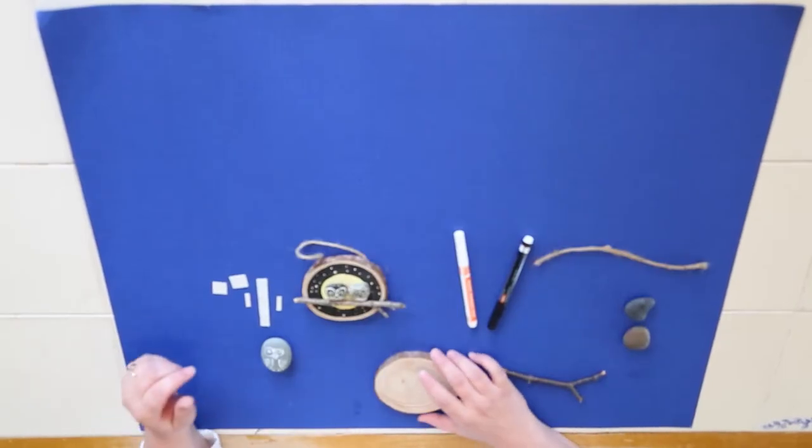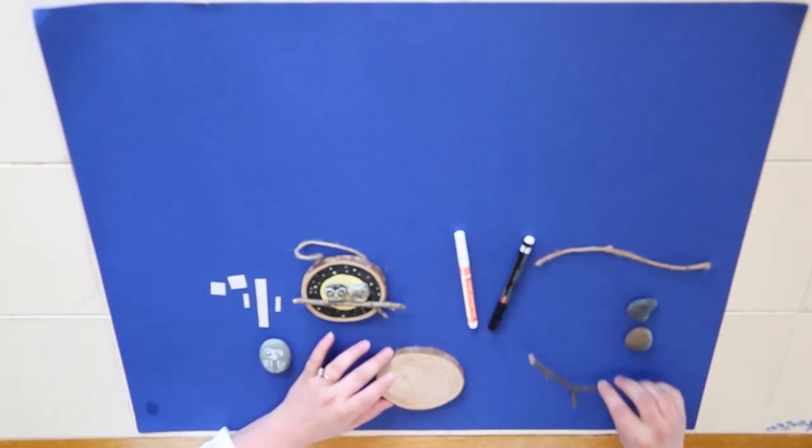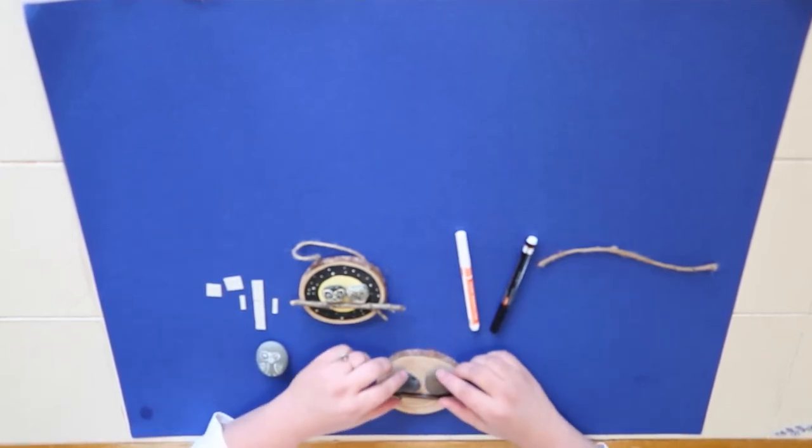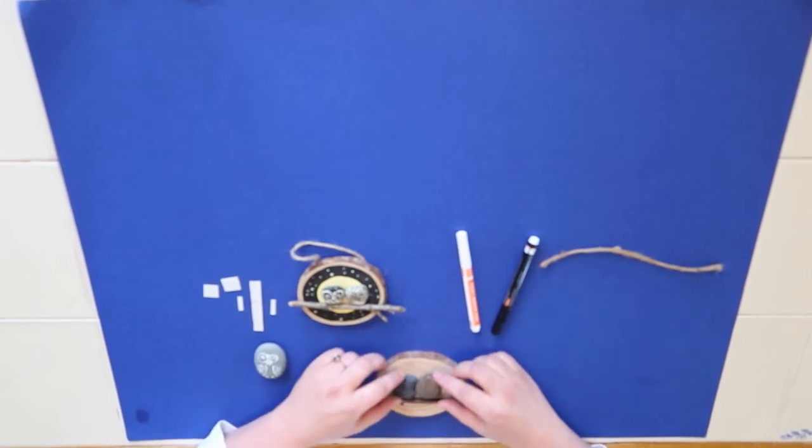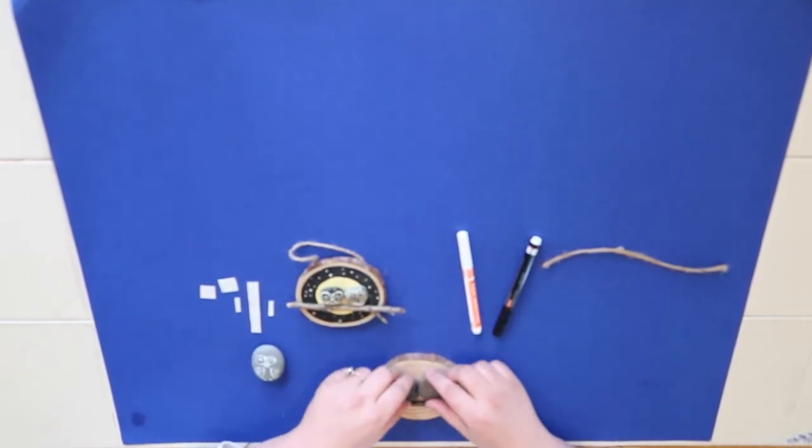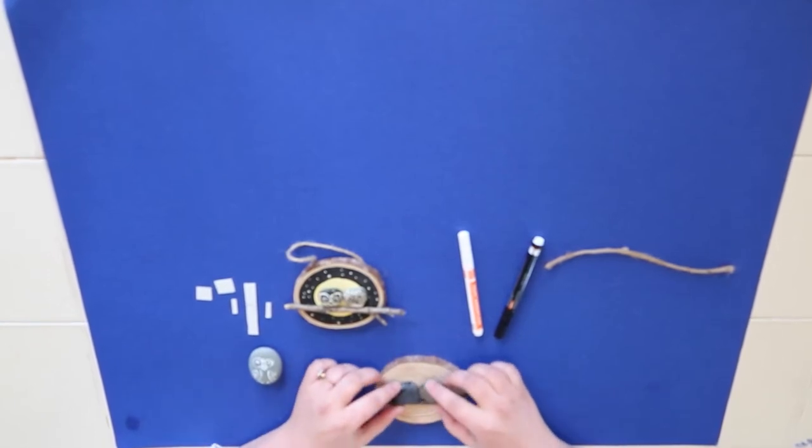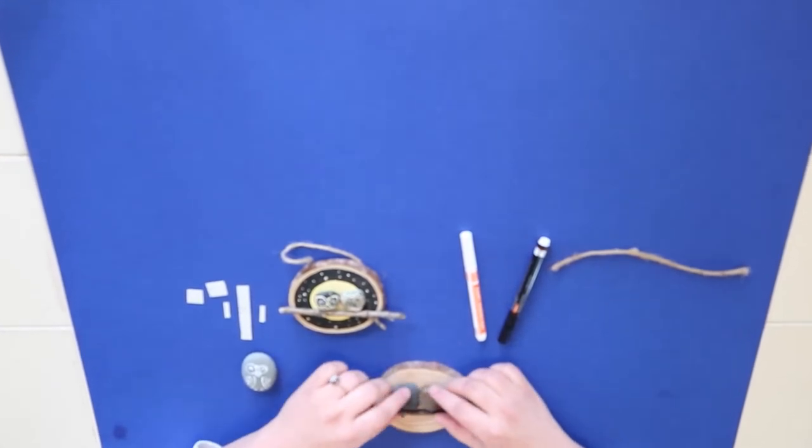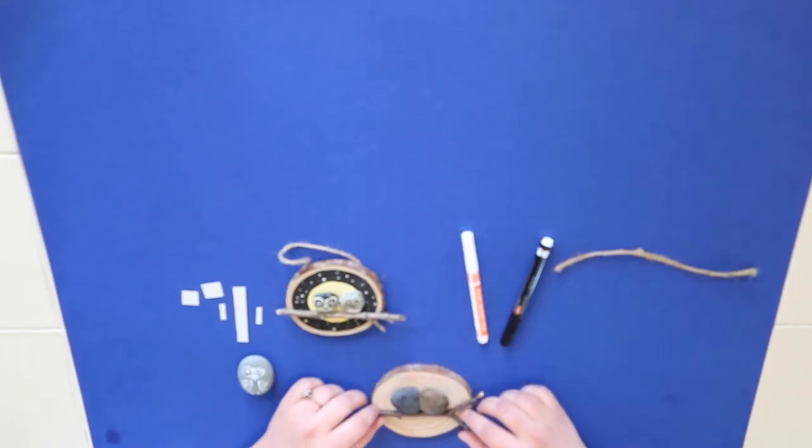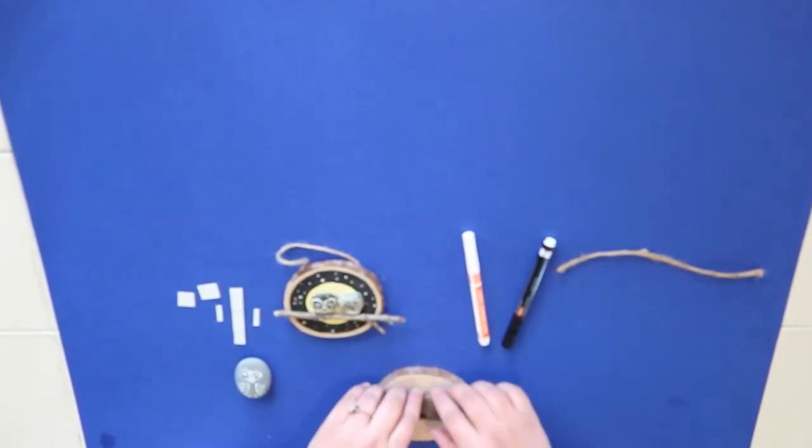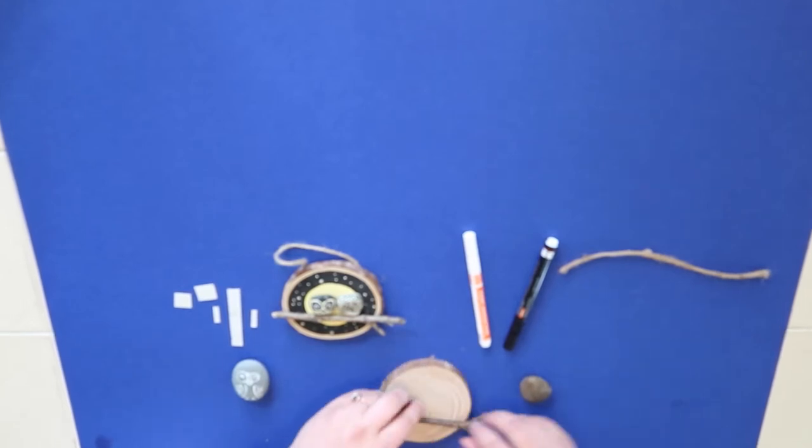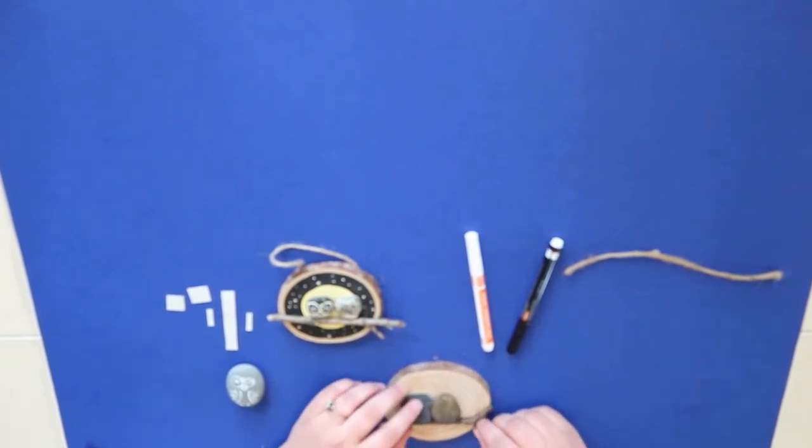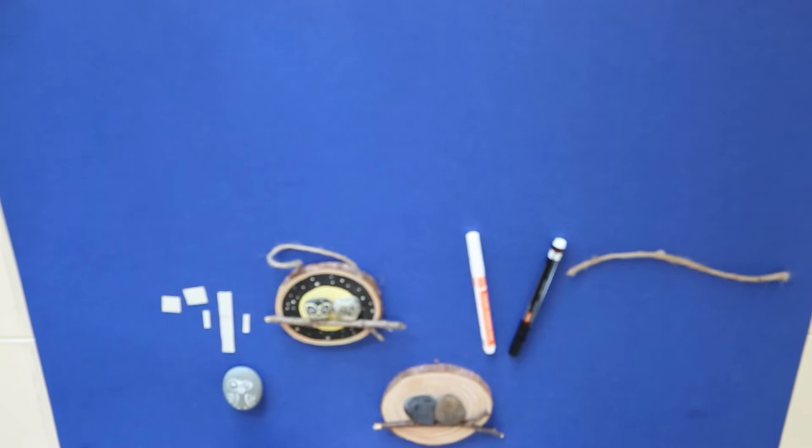So the first thing you want to do is take your wood slice and your branch and your rocks and you want to find out how you're going to lay out your project. You can move your rocks around to see do you like them nestled together like that or flip them around or possibly have them like this because you want to make sure that they're sitting on the branch nicely. You also want to check your wood slice too to see which way looks best for you and I think that I'm going to work with my project like this.